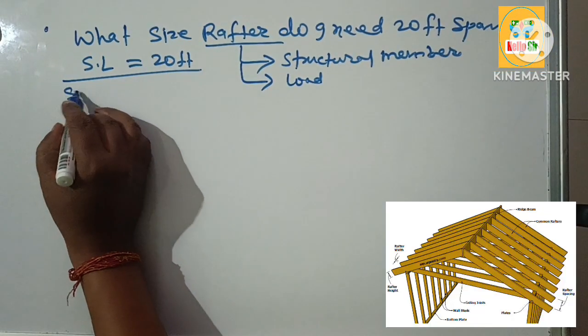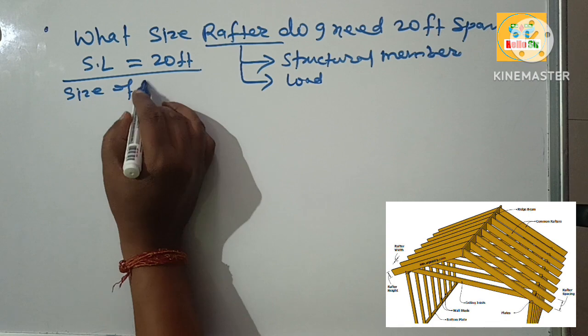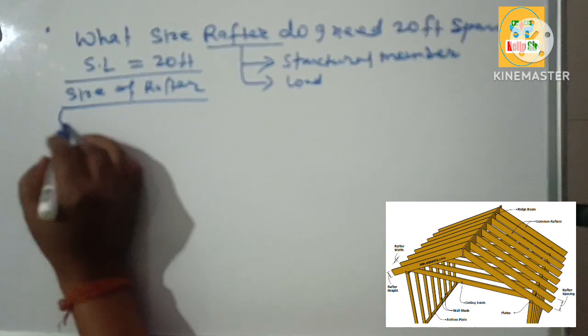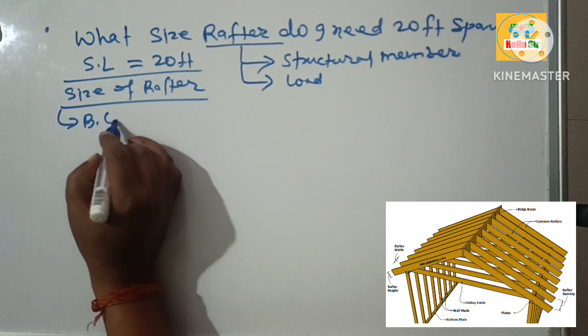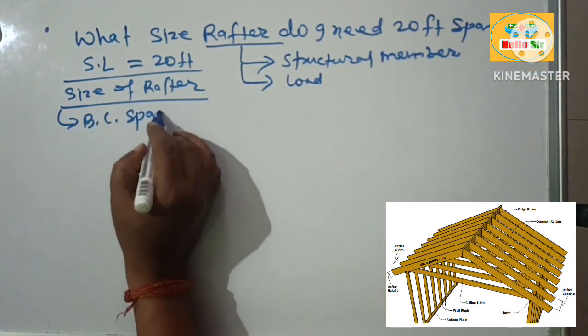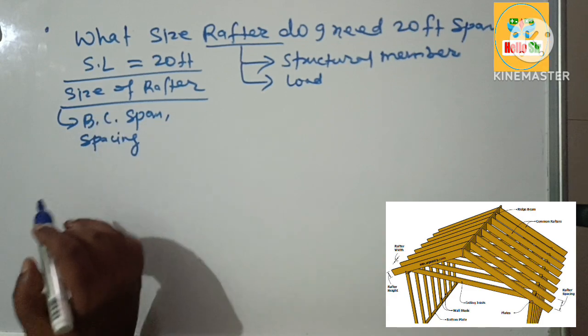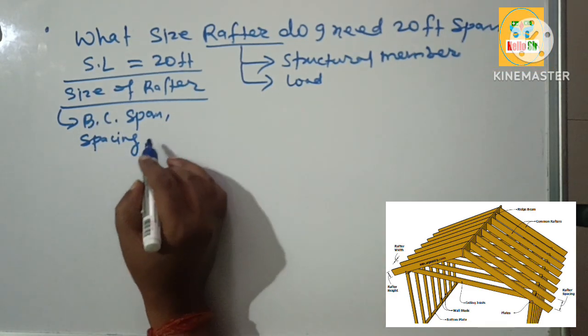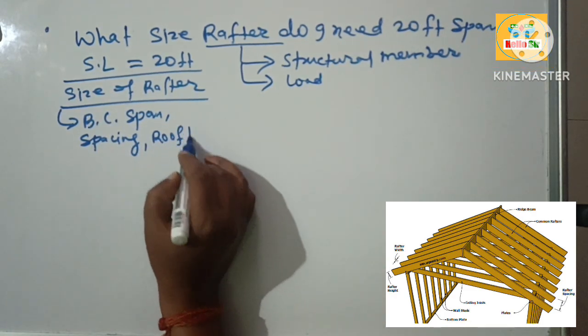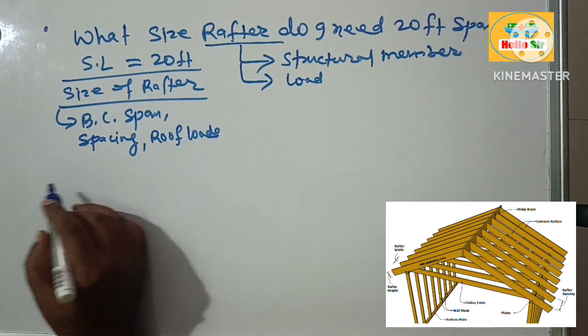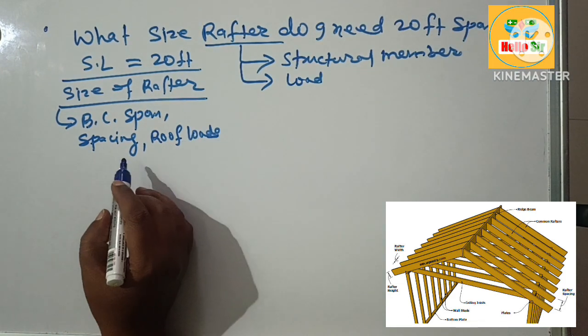The size of rafter depends on many factors like building code, the span length, the spacing between the rafter and roof load, species of wood and grade of wood.